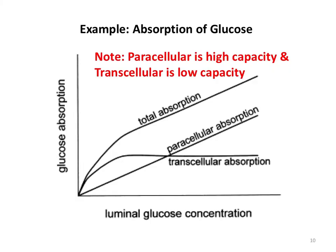Using glucose as an example: transcellular absorption has a saturable capacity—once it reaches its maximum, adding more glucose does not move more glucose and water through that pathway. In contrast, the paracellular pathway is essentially unlimited and linear—as glucose concentration rises, water movement through tight junctions in the small intestine increases proportionally. This illustrates the entire absorption process using glucose as an osmotic agent example.